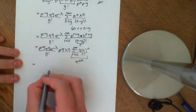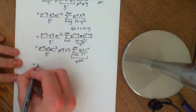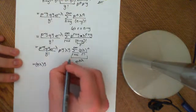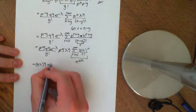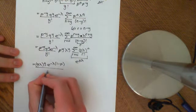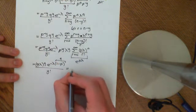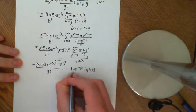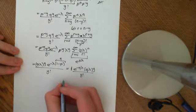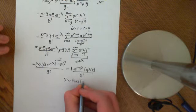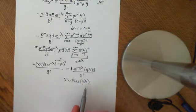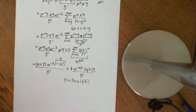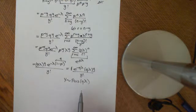This is exactly the PMF of a Poisson distribution, so Y ~ Poisson(Qλ). This makes intuitive sense: if the hen lays on average λ eggs and each has probability Q of not hatching, you'd expect Qλ eggs not to hatch. What's surprising is that the distribution is perfectly Poisson.